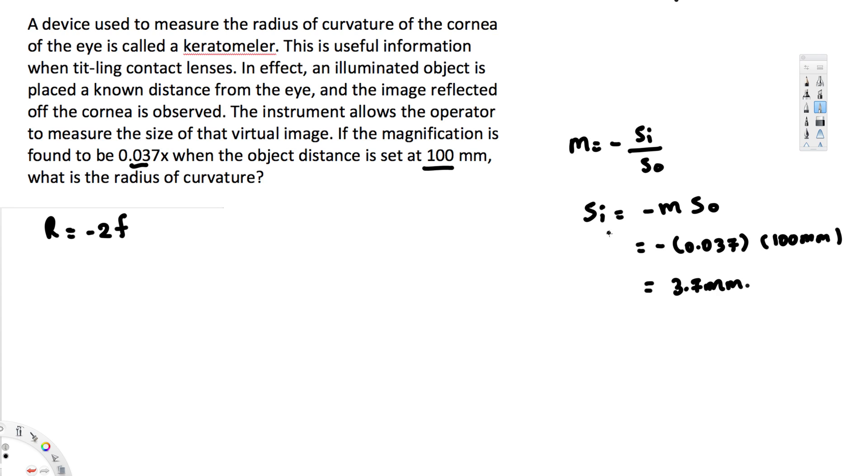Since we have the image distance and object distance, we can find the focal length using the lens formula: 1/f = 1/so + 1/si. So 1/f = 1/100 + 1/(-3.7) millimeters. This should be negative because of the negative sign. If you rearrange and calculate the f value, you get f = -3.8 millimeters.